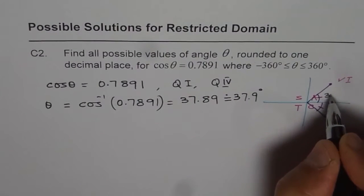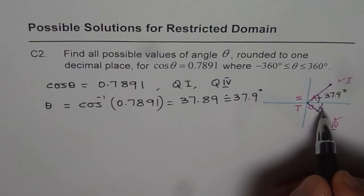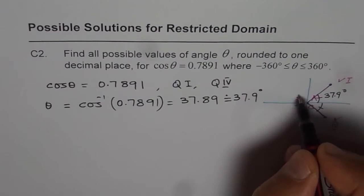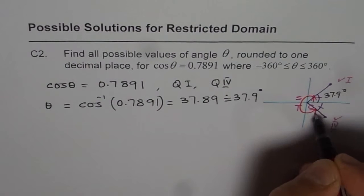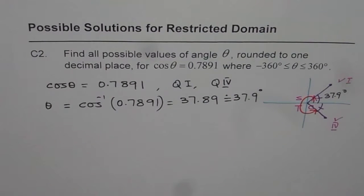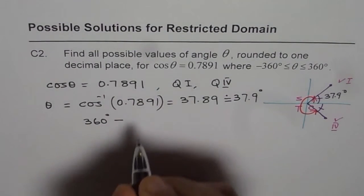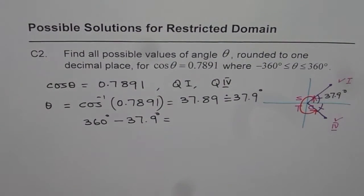So we get this angle theta as 37.9 degrees. Now how do you find the other angle? Well, in the domain of 0 to 360, the other angle is kind of like this. Which means 360 minus 37.9. So the other angle should be 360 degrees minus 37.9 degrees. So that is the other angle.